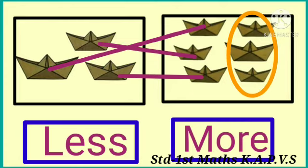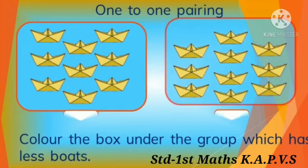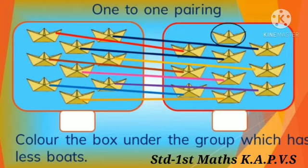Group A has less boards and group B has more boards. Now pair the boards in the second picture. After pairing the boards in group A with the boards in group B, one board remains in group B. So the boards in group A are less and the boards in group B are more. Group A is less and group B is more.